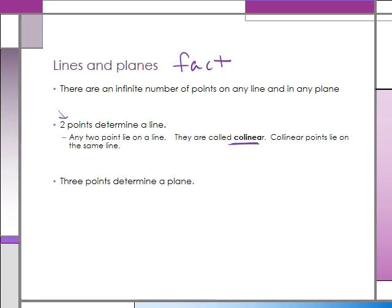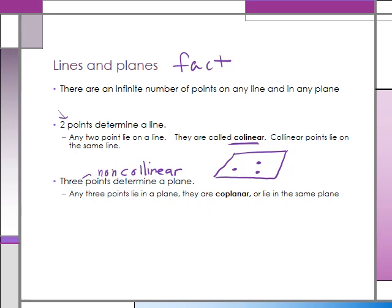Three points determine a plane — you need at least three points to determine a plane; with only two you have infinite possible planes. Those three points also need to be non-collinear, meaning all three cannot lie on the same line. Going the other way, any three points lie in a plane. In the previous diagram, points A, B, and C, even though not depicted as lying on a plane, do lie on a plane — so we say they're coplanar, meaning they lie in the same plane.